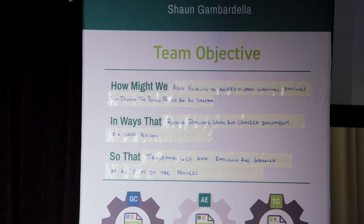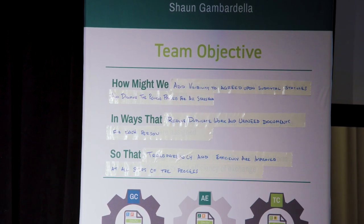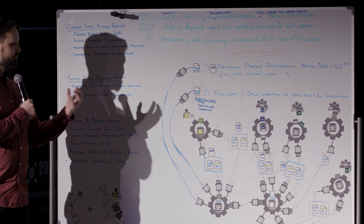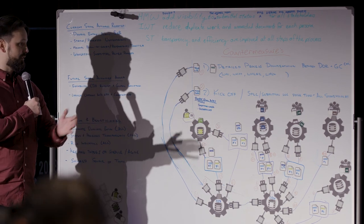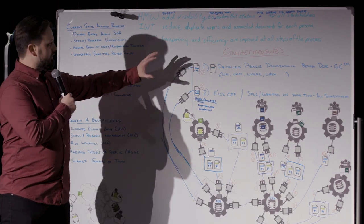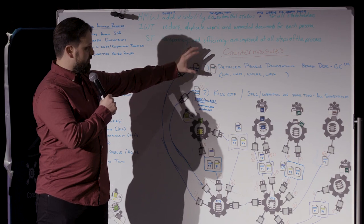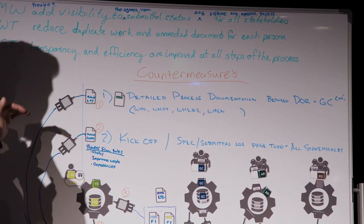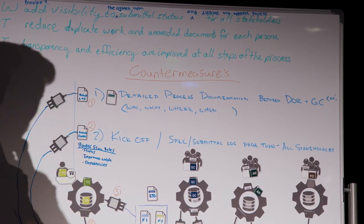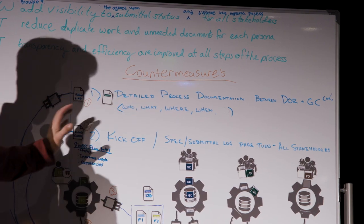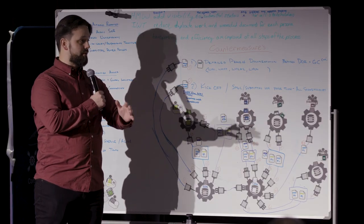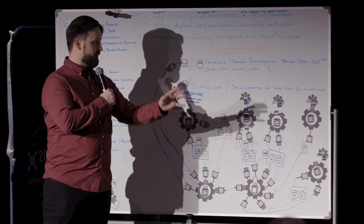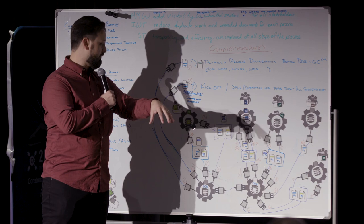We identified two problems to solve. One is people, communication, and interaction — technology is not an easy button; you still need human interaction combined with technology to make the process better. What we agreed upon is that the owner and GC need to align first on what they're building, creating a submittal log. The second pre-project kickoff meeting is a sync between the GC and subs to establish the agreed-upon process and expectations so everyone can build efficiently.